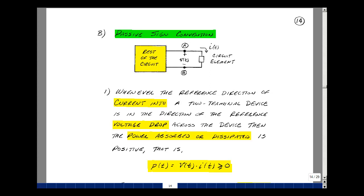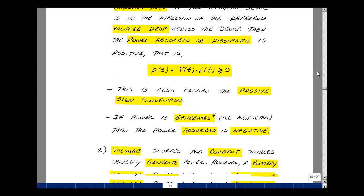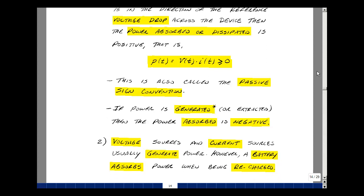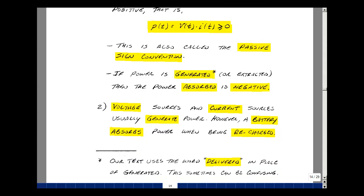Let's next take a look at what's called the passive sign convention. Suppose you have a circuit with a two-terminal element, where the current is coming into the plus terminal and out of the minus terminal. Whenever the reference direction of current into a two-terminal device is in the direction of the reference voltage drop across the device, then the power absorbed or dissipated is positive. This is called the passive sign convention. If the power is generated or extracted, then the power absorbed is negative. Voltage sources and current sources usually generate power, however a battery absorbs power when it's being recharged.